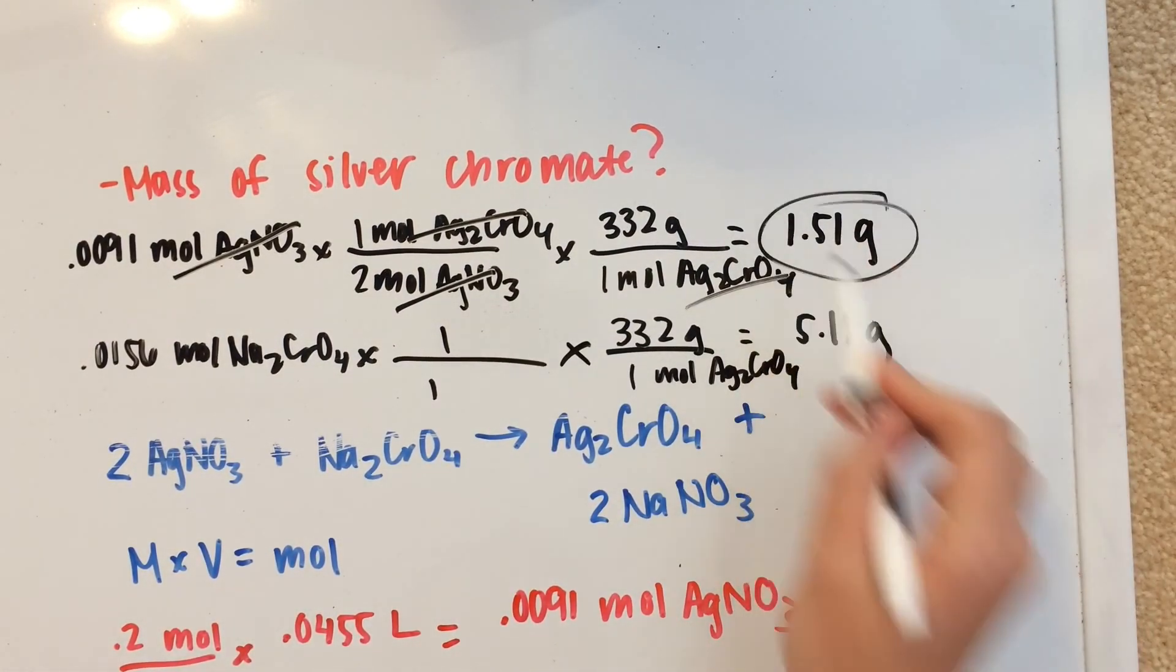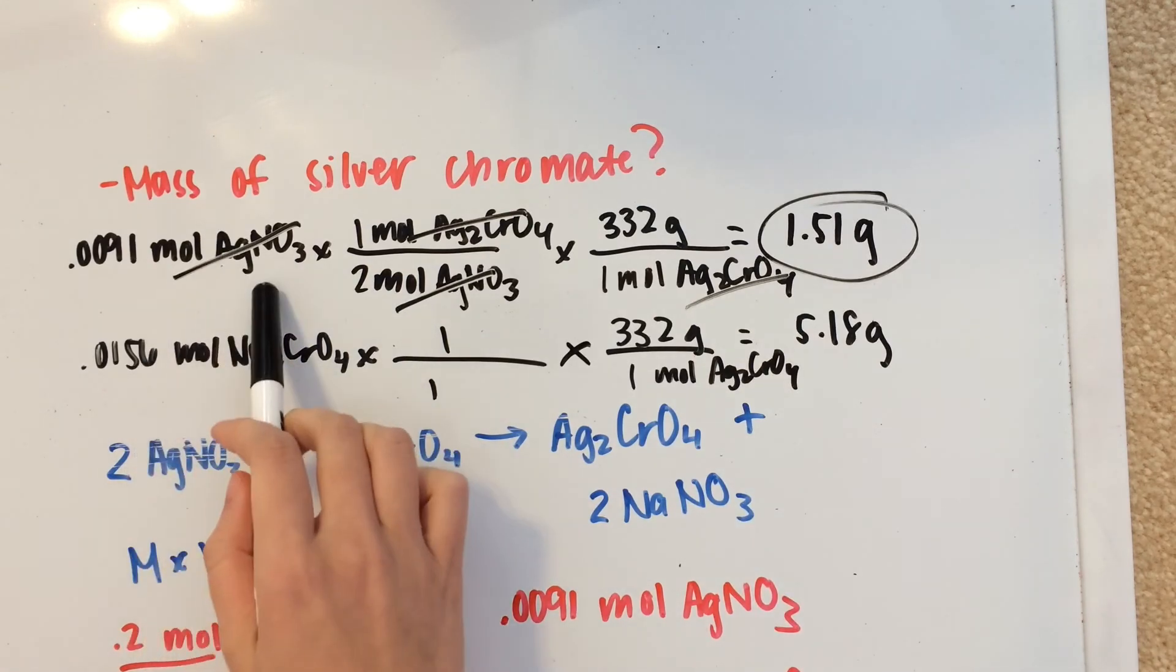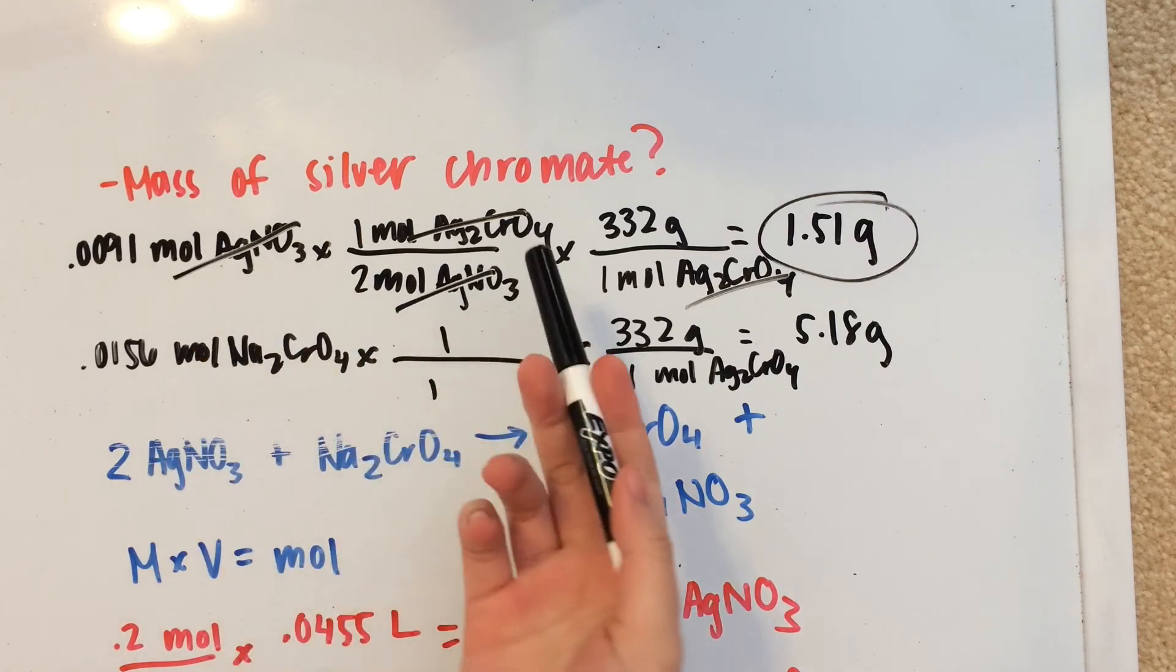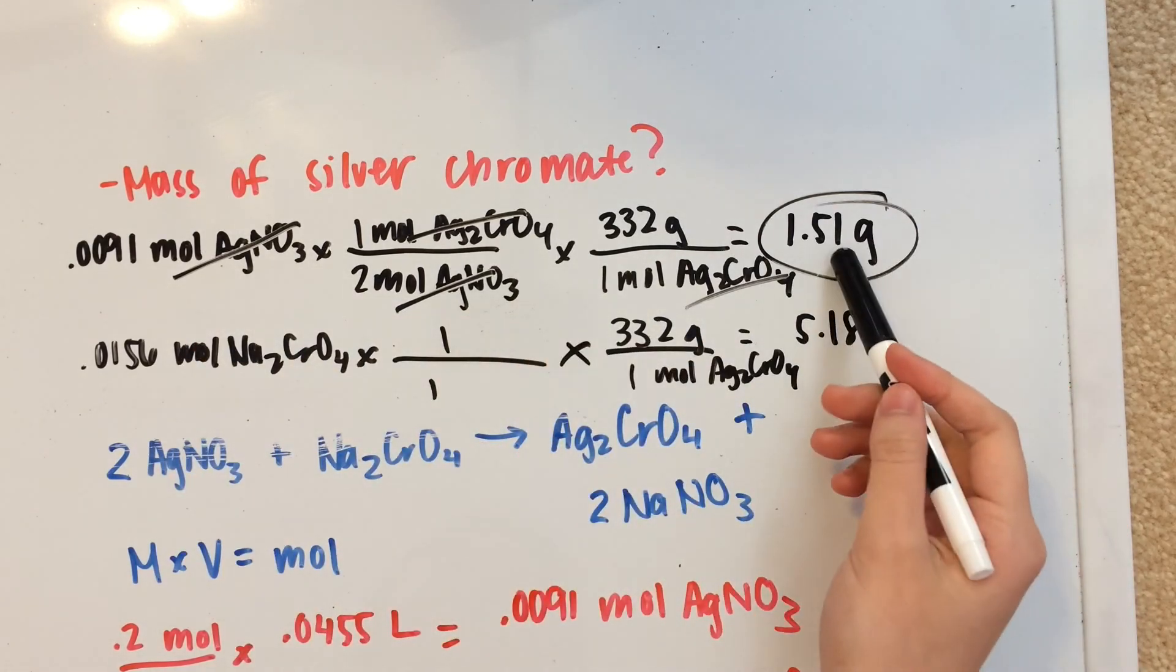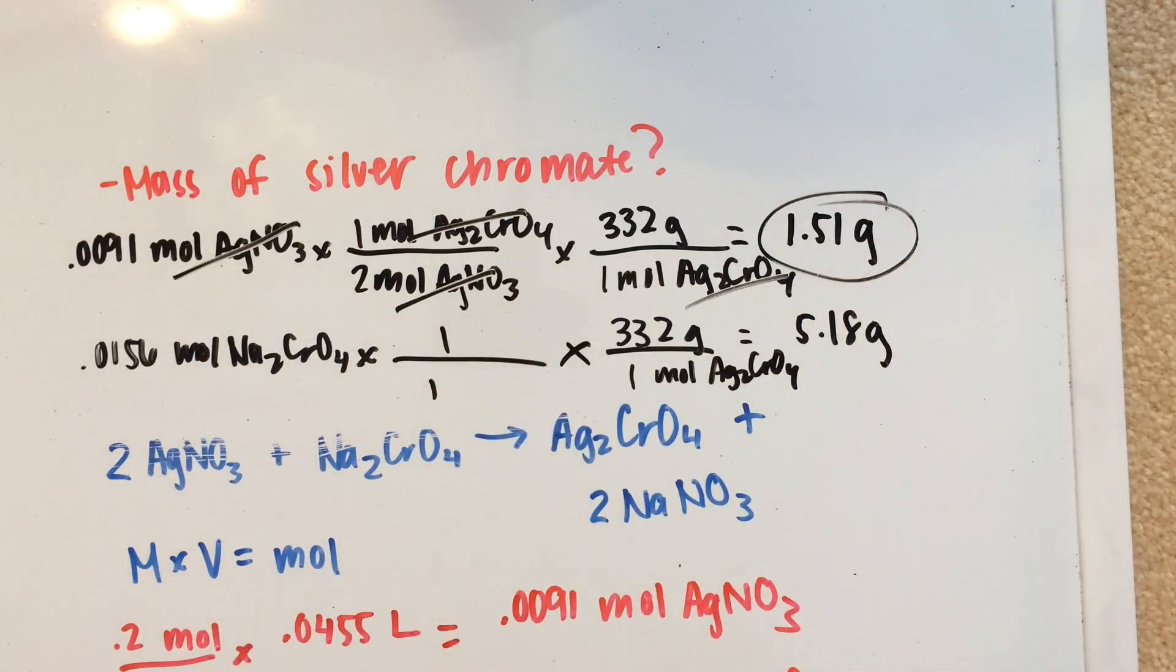Now, obviously, this one's the lower amount. So that means that AgNO3 is the limiting reactant. And the mass of silver chromate that will be produced is 1.51 grams. That's your answer.